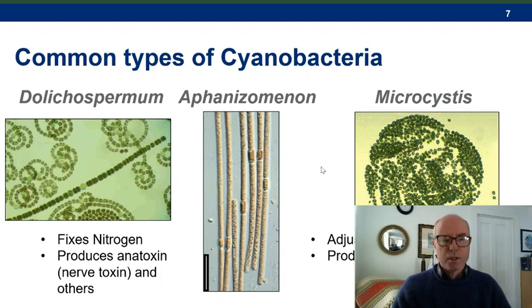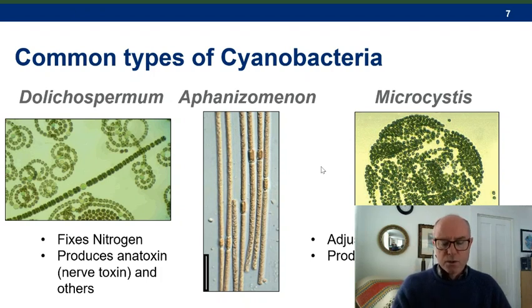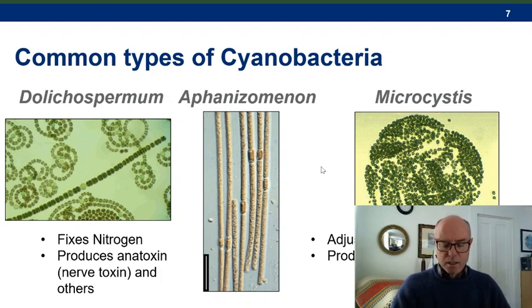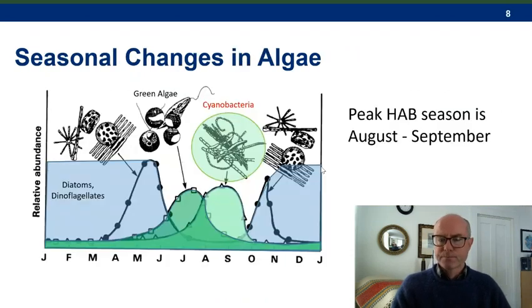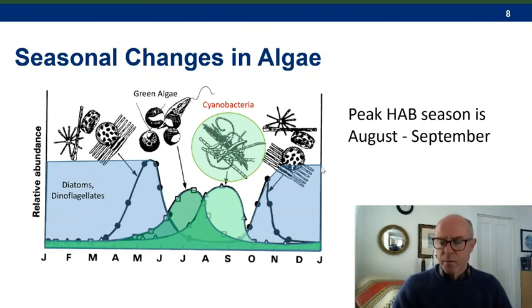Microcystis is able to adjust its buoyancy, meaning it can rise and fall through the water column to regulate its exposure to light levels. It is a very common cyanobacterium and produces the toxin microcystin, which is a potent liver toxin.